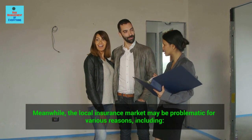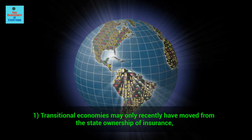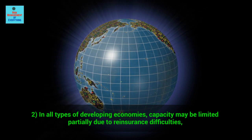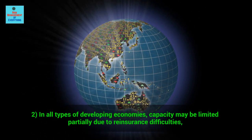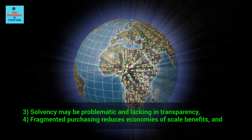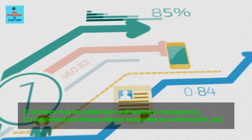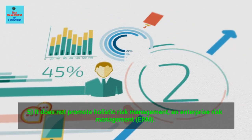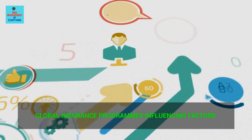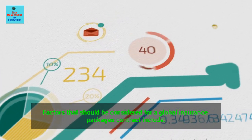The local insurance market may be problematic for various reasons, including: 1. Transitional economies may only recently have moved from state ownership of insurance. 2. In developing economies, capacity may be limited partially due to reinsurance difficulties. 3. Solvency may be problematic and lacking in transparency. 4. Fragmented purchasing reduces economies of scale benefits. 5. It does not promote holistic risk management or enterprise risk management (ERM).